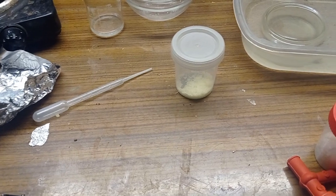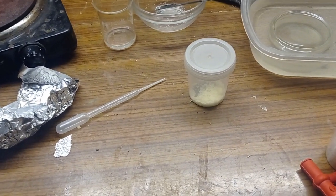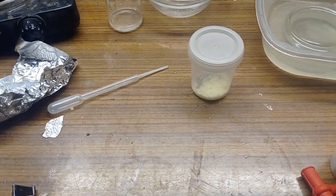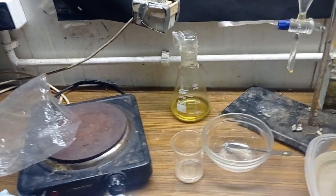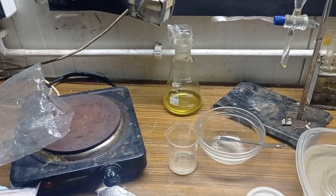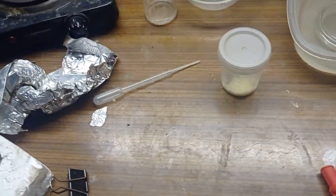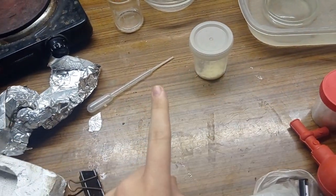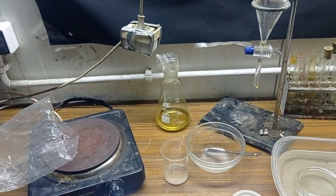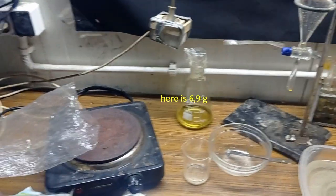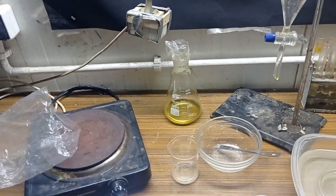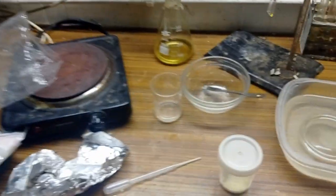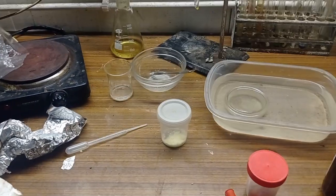So ortho-nitrotoluene should be around twice as much. The correct proportion is 32% of para-nitrotoluene, 64% of ortho-nitrotoluene, and 3% of meta-nitrotoluene.